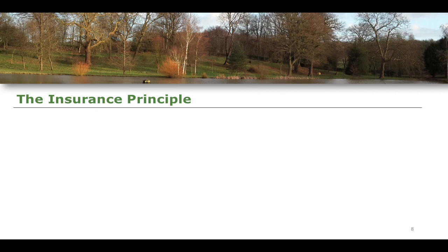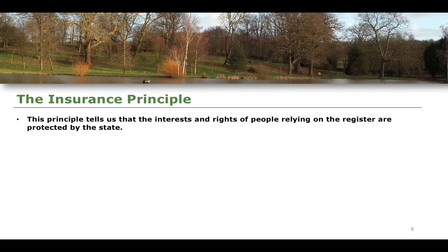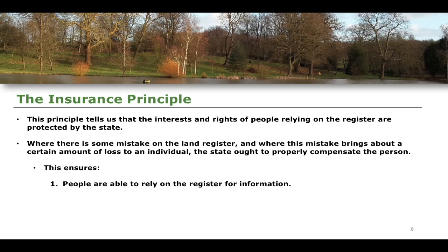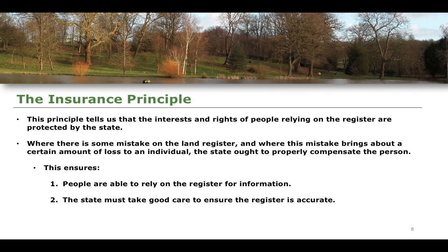Finally, we have the insurance principle. This tells us that the interests and rights of people relying on the register are going to be protected by the state. The Land Registry aims to accurately reflect ownership and interests over land. Where there is a mistake in the Land Register that brings about some loss to an individual, the insurance principle says the state ought to properly compensate that person. This means people can trust the register, and the state is incentivised to keep the register accurate.